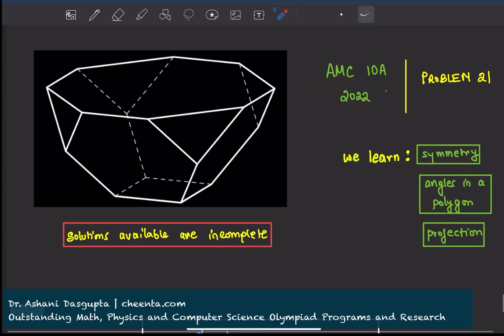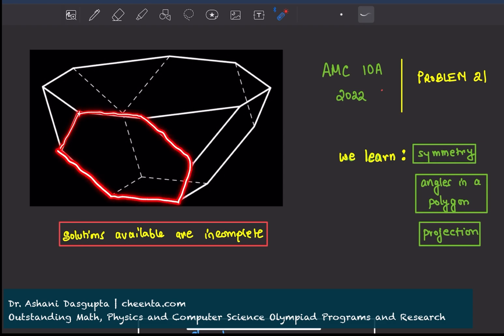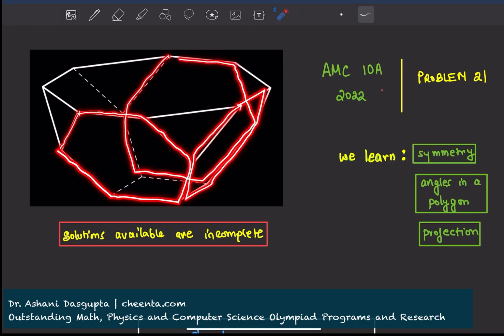It says that there is a bowl made out of hexagons. Here is a hexagon, a regular hexagon. Here is another hexagon, here is another one, and finally, here is the fourth one.